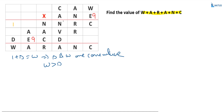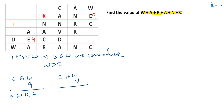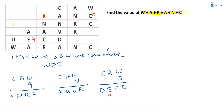There are three partial products. CAW into 9 equals NNNRC. CAW into N equals AAVR. CAW into A equals DECD. What is the value of E? That is equal to 9. Just write down 9 wherever E exists — only one case. Already we have established E is equal to 9.